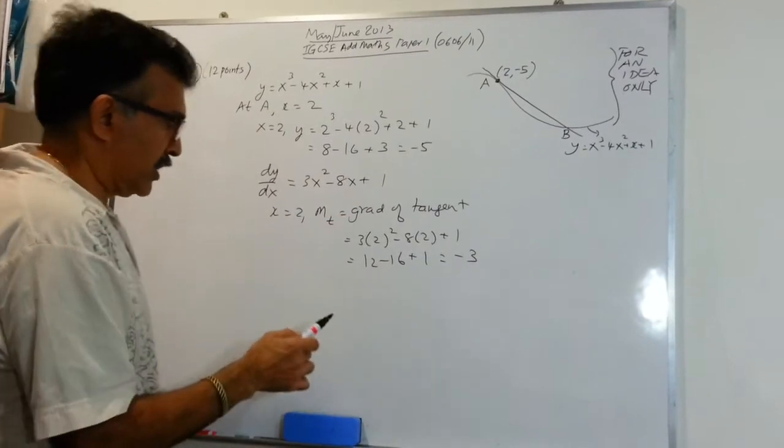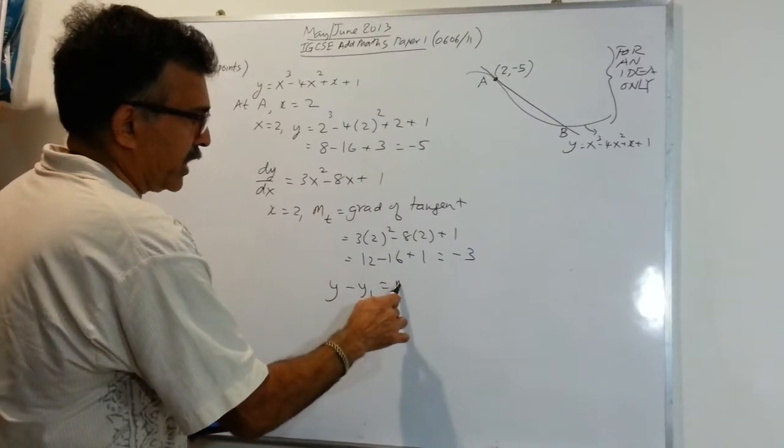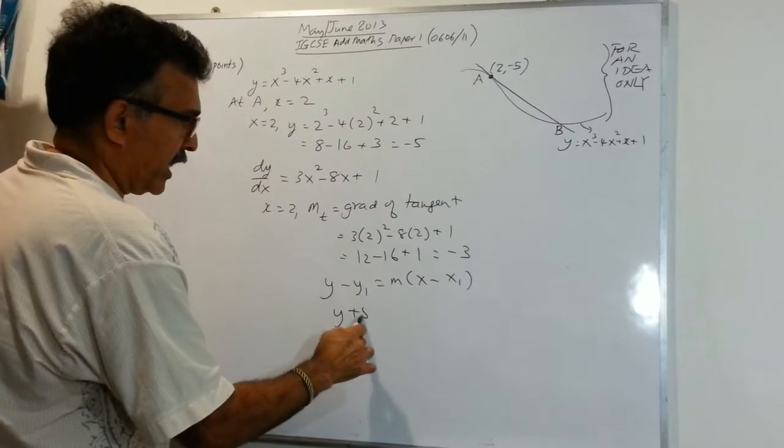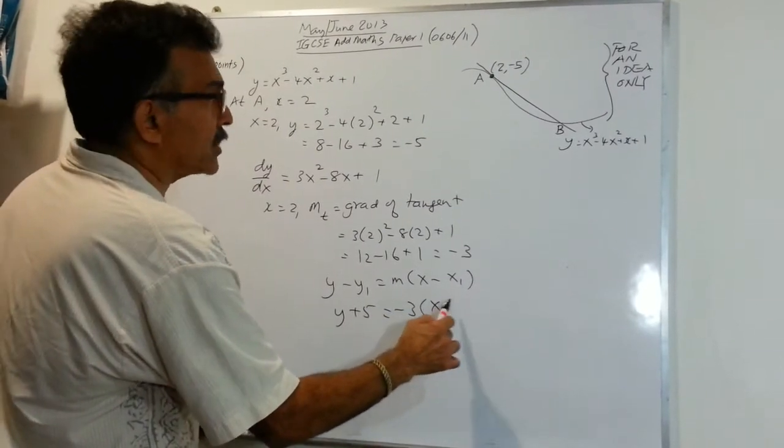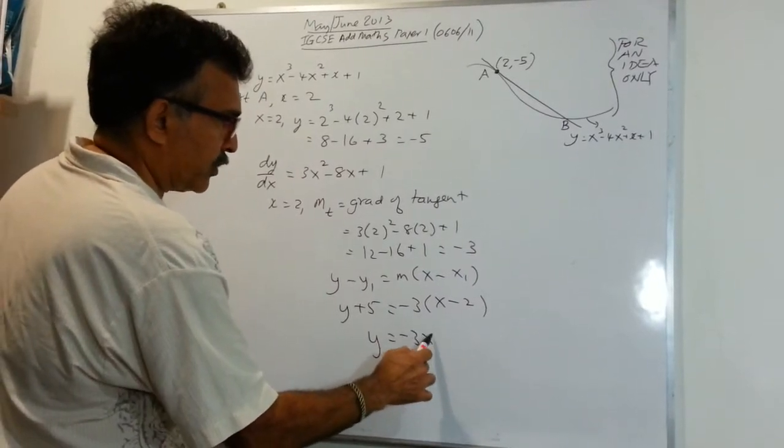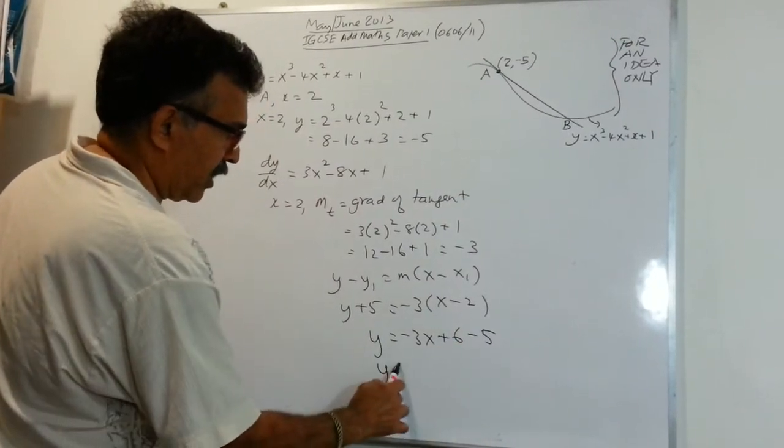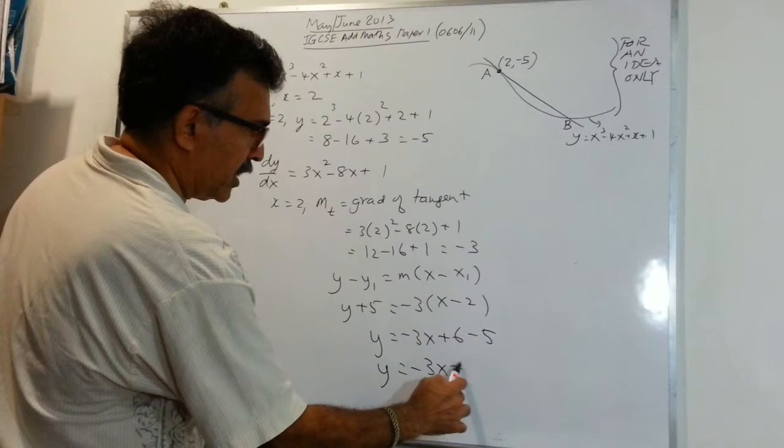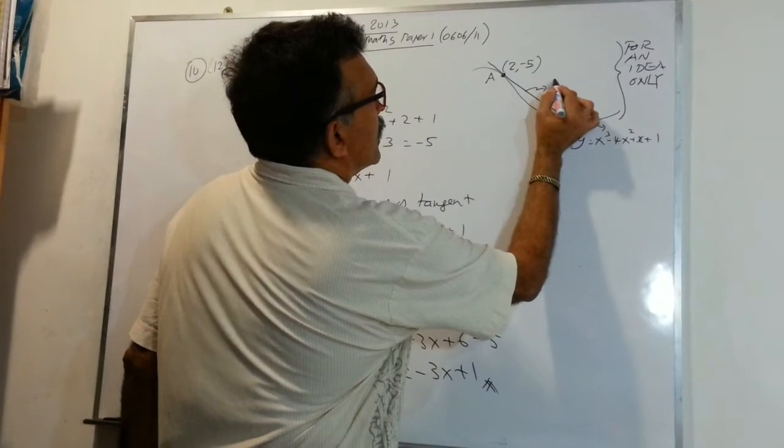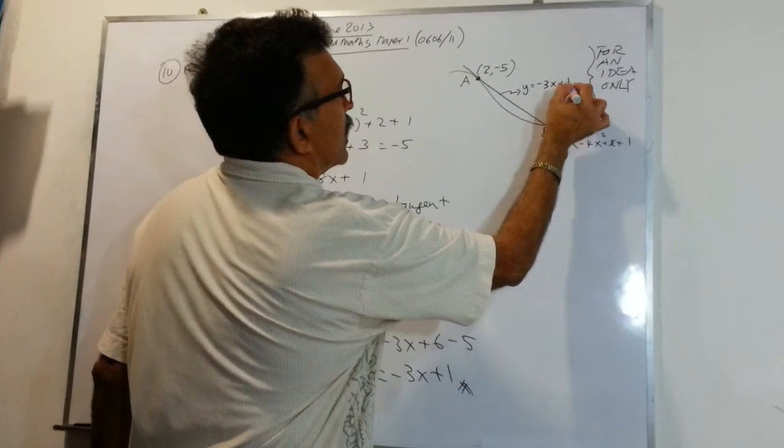Now we can write the equation of the tangent. We'll have y minus y1 equals mx minus x1. So we can write y plus 5 equals negative 3 times x minus 2. When we clean this up, you will get y equals negative 3x plus 6 minus 5. And you will get y equals negative 3x plus 1. And we are done. So let's write it here.